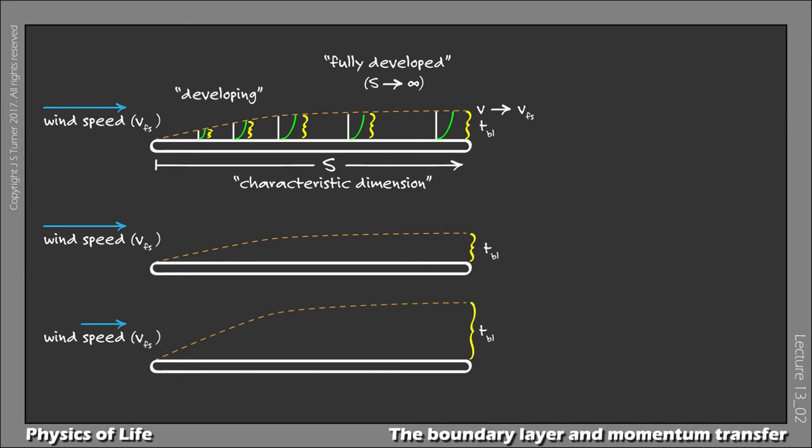Why? Well, there's a whole mathematics of this, but intuitively it's pretty easy to understand why. Slower wind speed means less momentum to transfer, shallower velocity gradients overall, and therefore a thicker boundary layer.